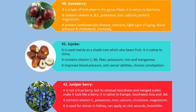Number 40. Jostaberry. It is a type of fruit plant in the genus Ribes. It is native to Germany. It contains vitamin A, B, C, potassium, iron, calcium, protein and magnesium. It prevents cardiovascular disease, cataracts, fights signs of aging, and improves blood pressure, cholesterol, and immunity.